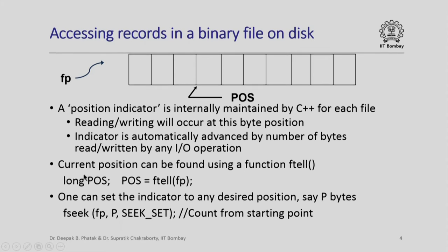For example, to find out the current position of the position indicator, we can use the function ftell. If I say ftell(fp) and assign it to a long int pos, then pos will now have the value of the position indicator. Suppose I want to read or write at some other byte position p, then I can use a function fseek.